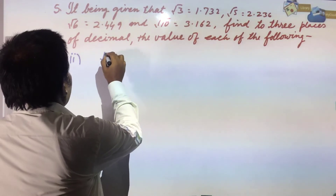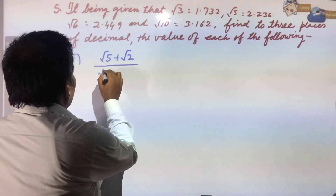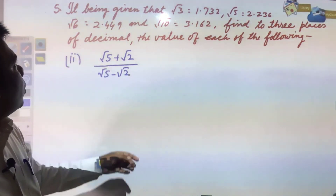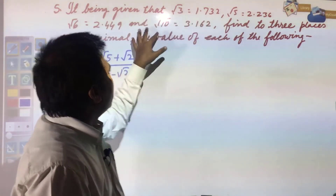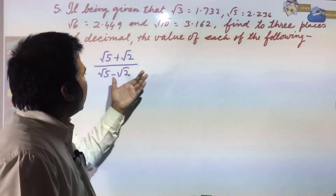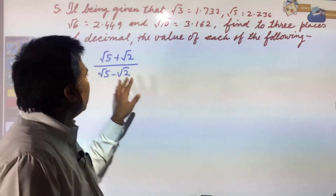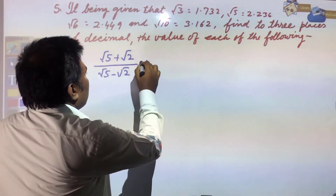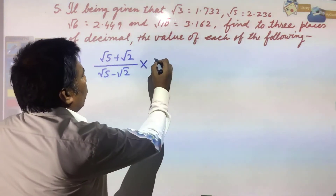The expression is (√5 + √2)/(√5 - √2). Last day I told you that if you place the values directly at the beginning it will be very difficult. It is better to rationalize first and then put the values. So we rationalize: the rationalizing factor of √5 - √2 is √5 + √2.